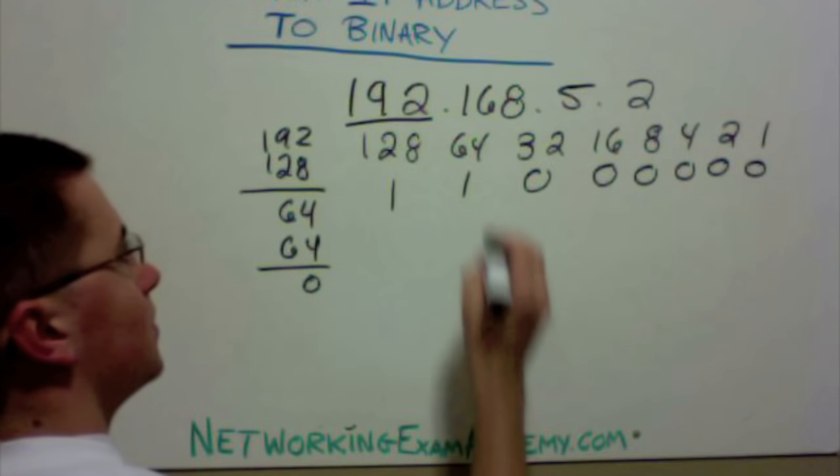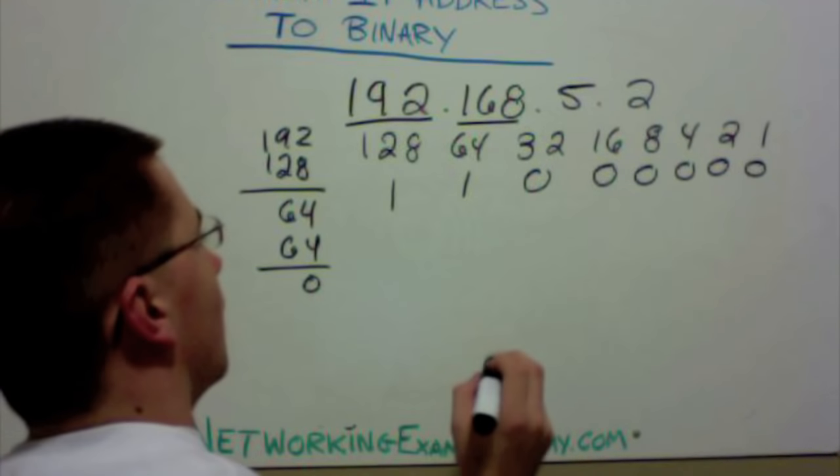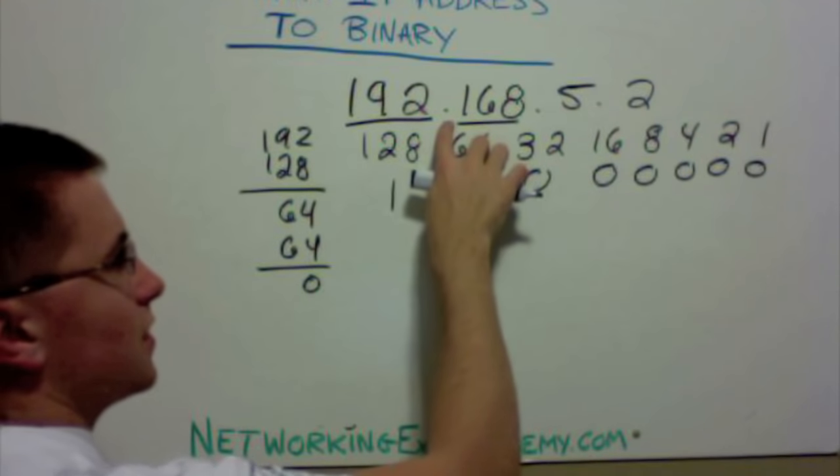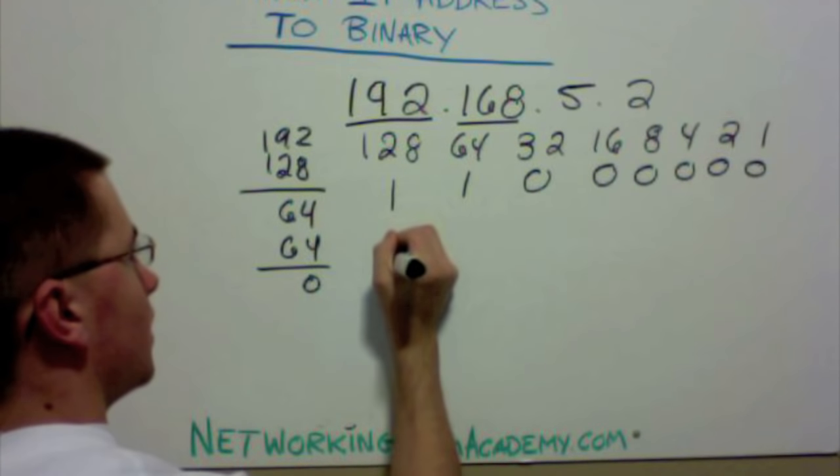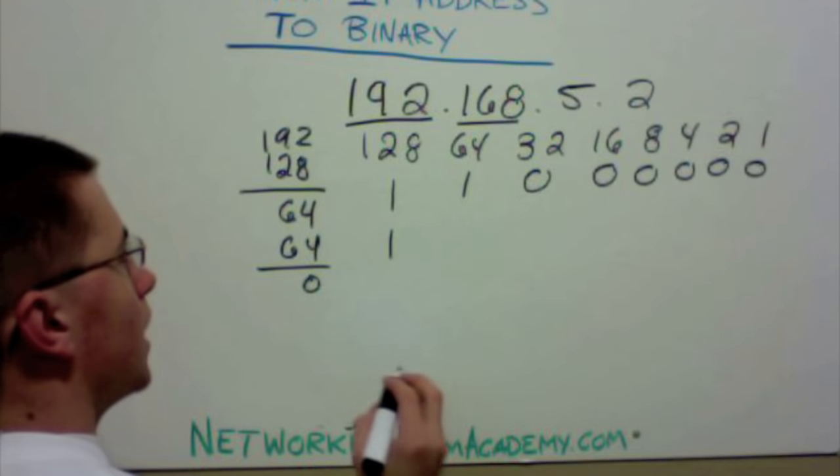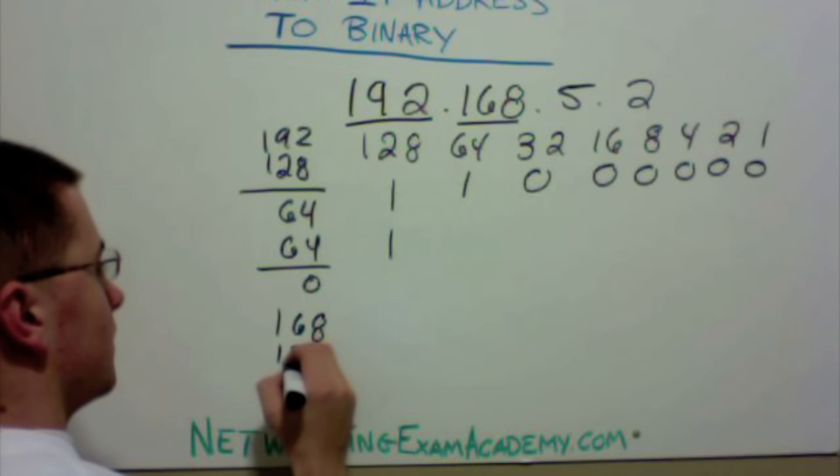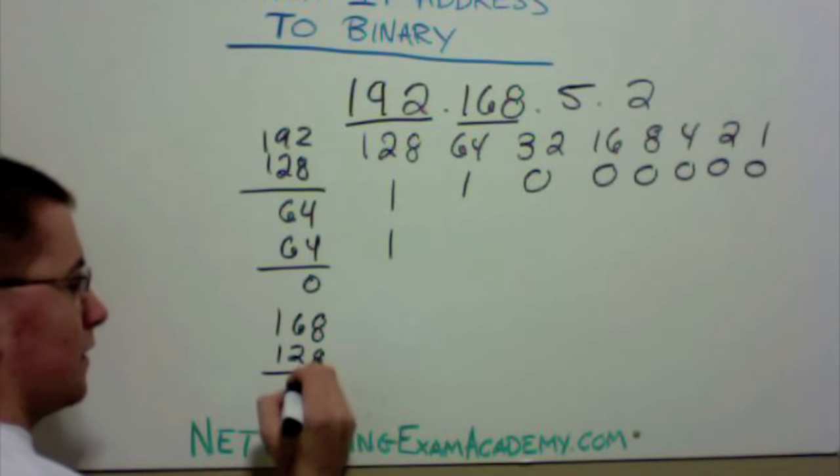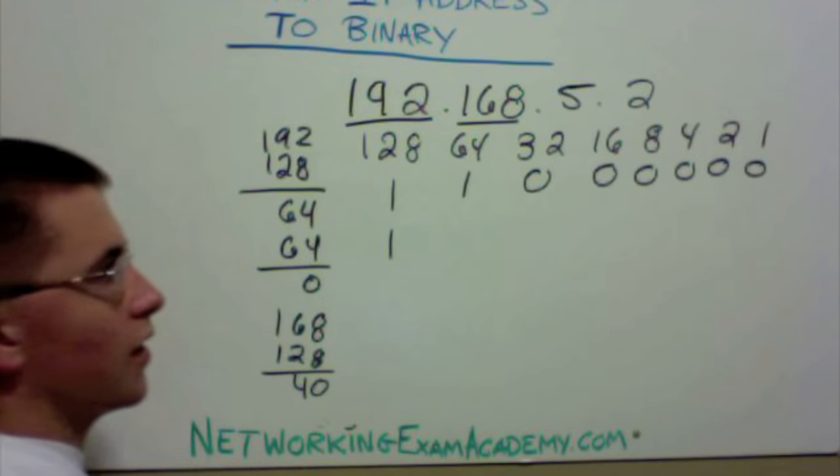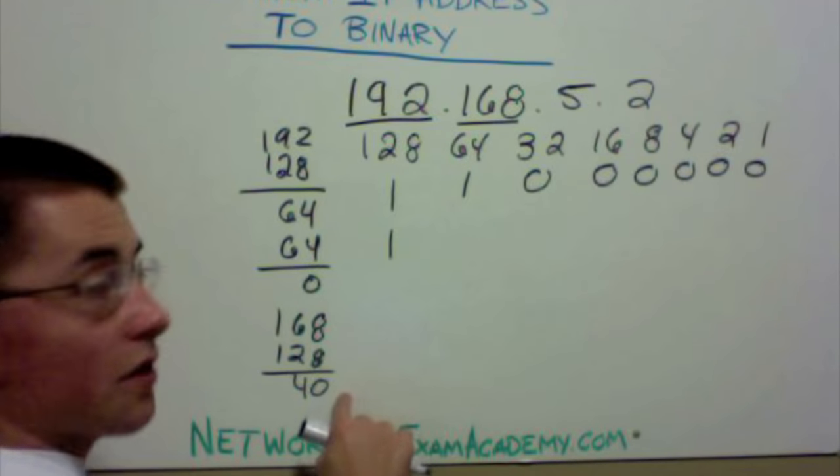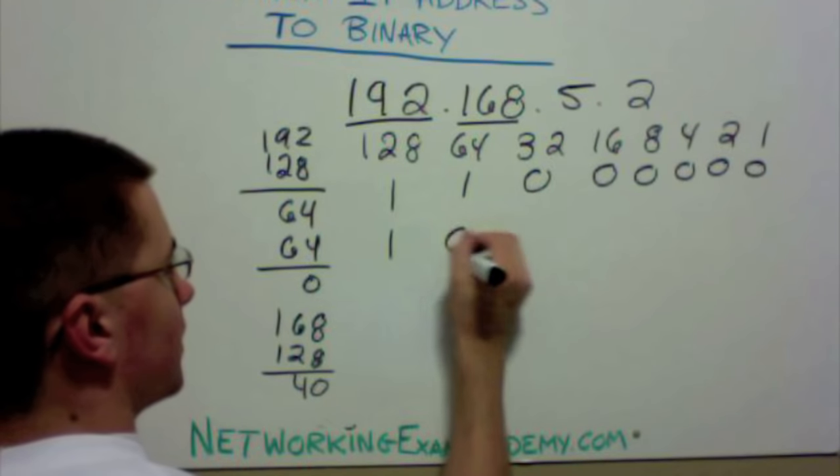Now let's do 168. Is 128 going to 168? Yes, it does, so we place a 1 here. Now we need to subtract 128 from 168. And that leaves us with 40. 64 does not go into 40, so we place a 0 here.